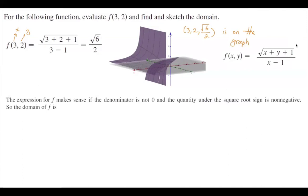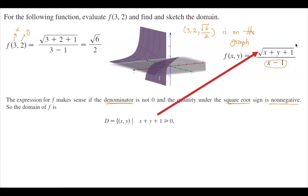Now take a look at the function. You have a square root and you have a denominator. First of all, the denominator cannot be equal to 0. At the same time, when you have a square root, the square root cannot be negative — everything inside the square root must be positive or 0. Algebraically, the domain is the set of all ordered pairs such that the quantity inside the radical must be greater than or equal to 0, and the denominator cannot be 0, so x minus 1 cannot be 0, or x cannot be 1.